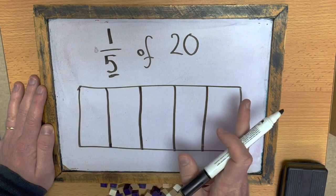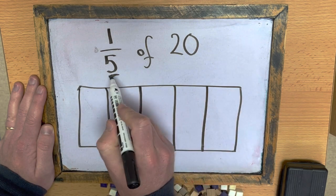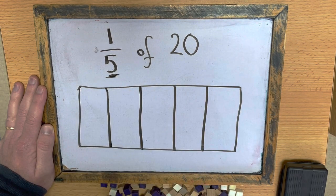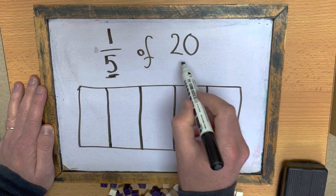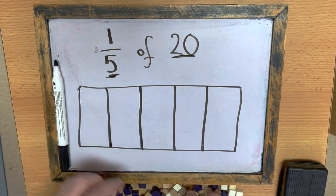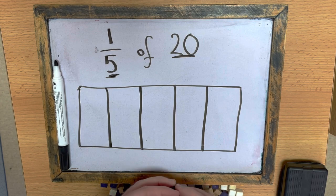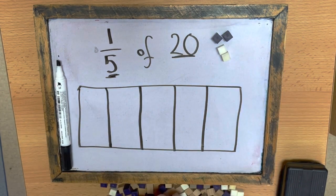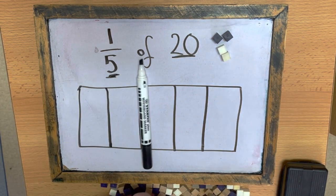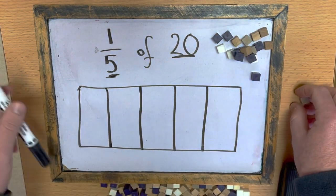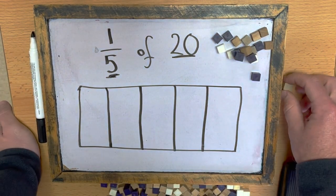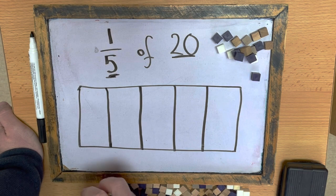I did a rectangle with 5 sections because of the denominator. Then I need to find 20 objects or 20 things. So, I'm going to use 20 of these little counter type things here, and all I'm going to do is separate them equally into fifths.